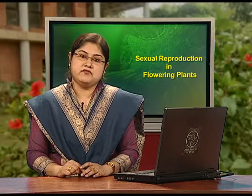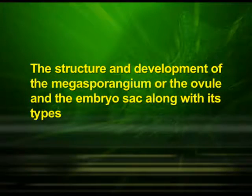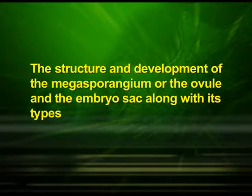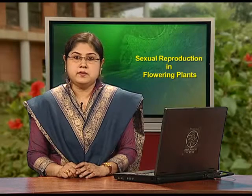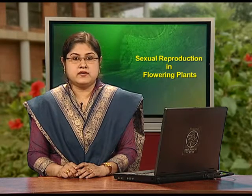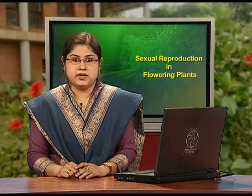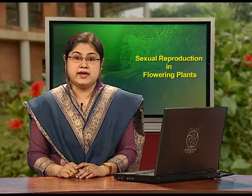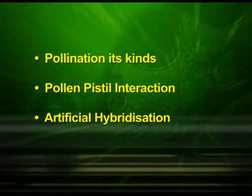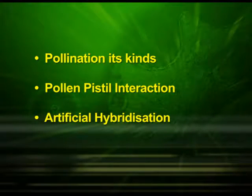The second part will cover the structure and development of the megasporangium or the ovule and the embryo sac along with its types. The third part will give the detailed account of pollination, its kinds, pollen-pistil interaction and artificial hybridization.